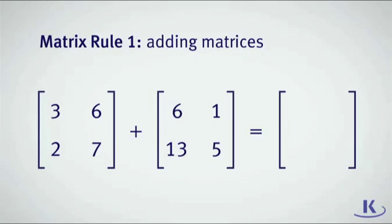Start by adding the numbers in the upper left of the matrices, the 3 and the 6. Next, add the numbers in the upper right of the matrices, the 6 and the 1. Now add the 2 and 13. And finally, add 7 and 5. You have now successfully added two matrices. Not too difficult, right?